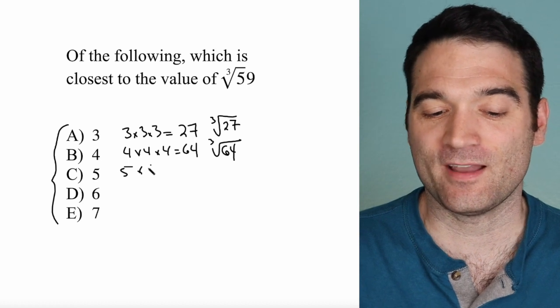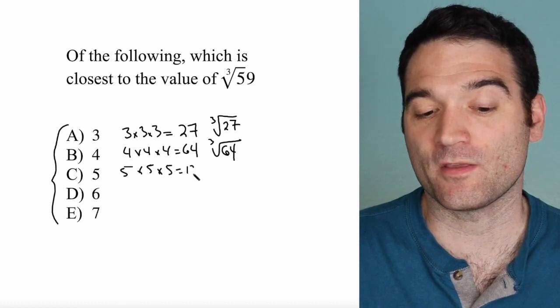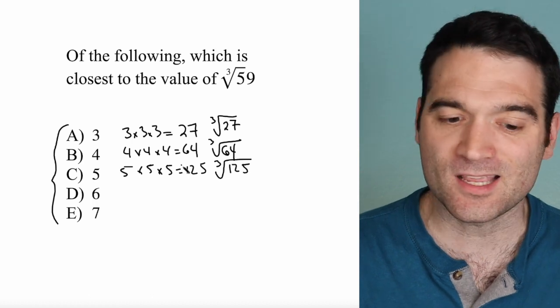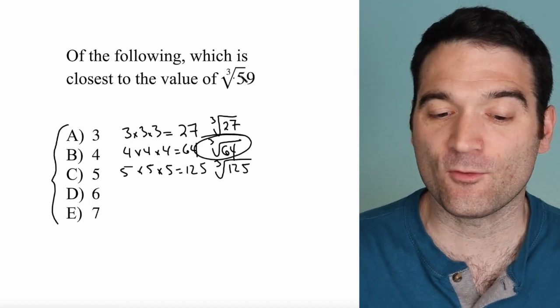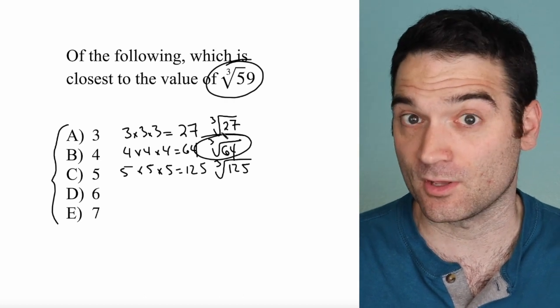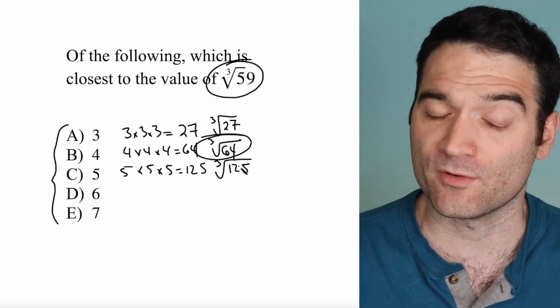And 5 times 5 times 5, we could keep going here, is 125. But the minute we do this, cube root of 125, we see that the cube root of 64 is very close to the cube root of 59. Definitely closer than the cube root of 27, or the cube root of 125.